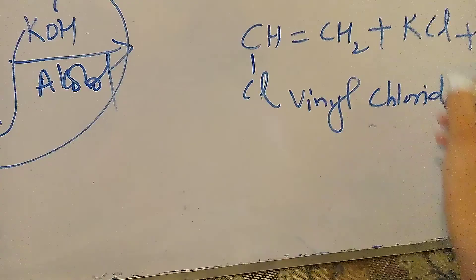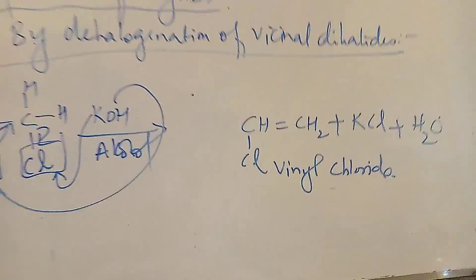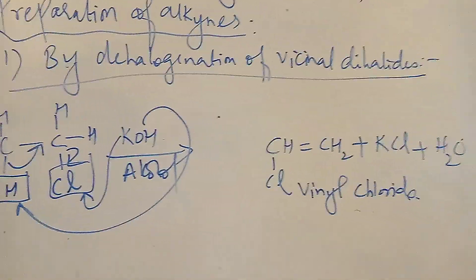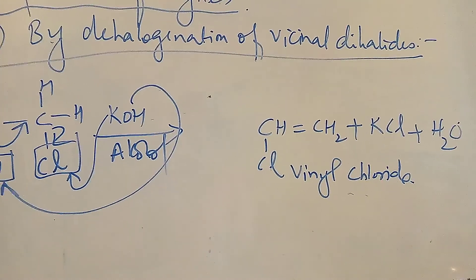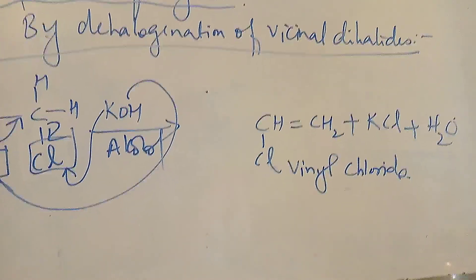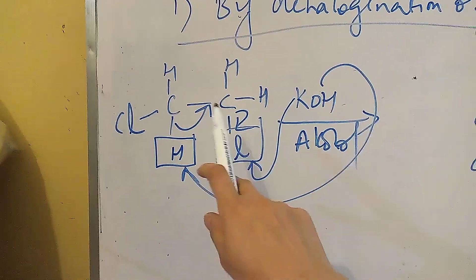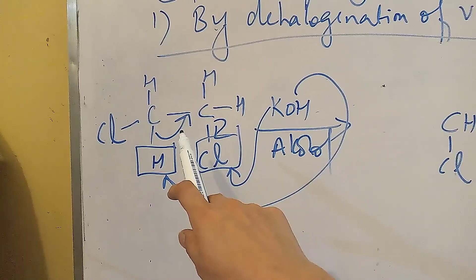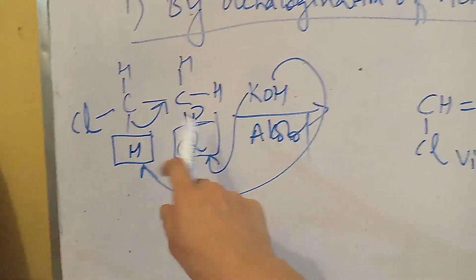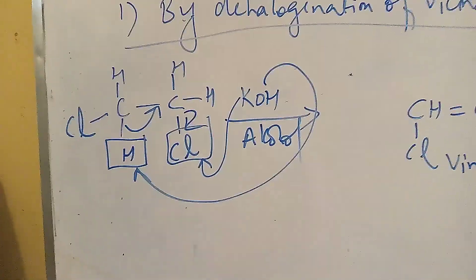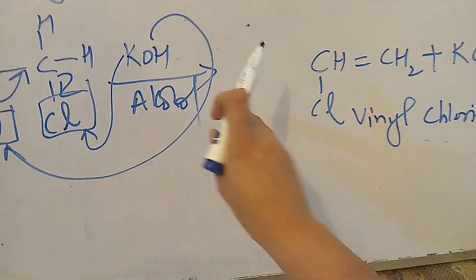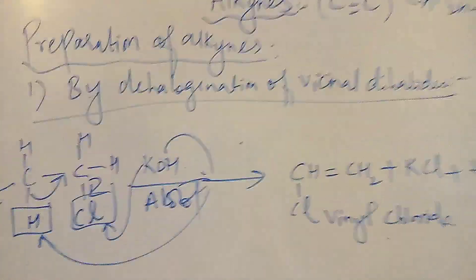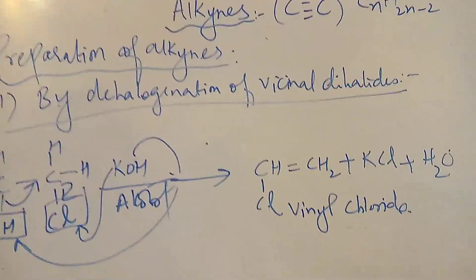This product is vinyl chloride, also called chloroethene. The starting material, the vicinal dihalide, is called 1,2-dichloroethane. Now, we have not yet produced an alkyne — the dehydrohalogenation is carried out in two steps.